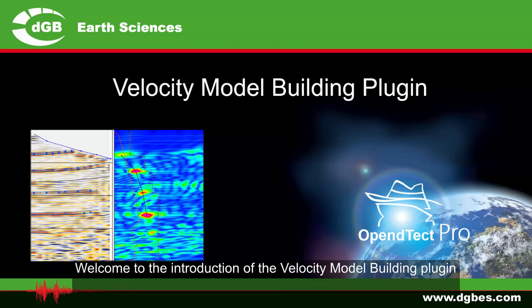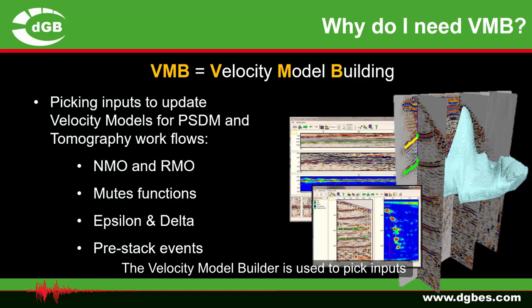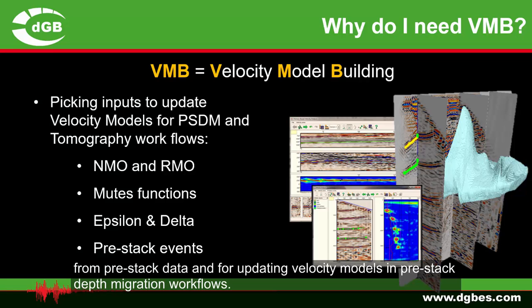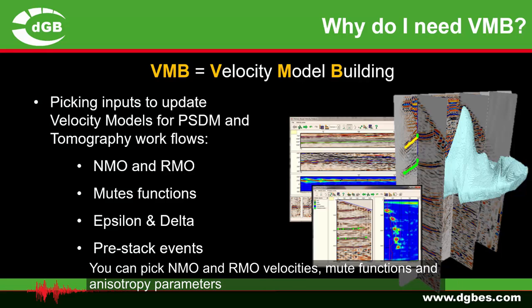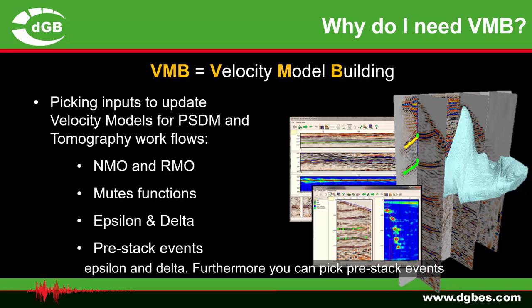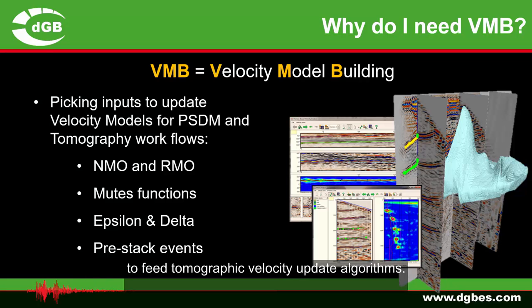Welcome to the introduction of the Velocity Model Building plugin. The Velocity Model Builder is used to pick inputs from pre-stack data and for updating velocity models in pre-stack depth migration workflows. You can pick NMO and RMO velocities, mute functions, and anisotropy parameters epsilon and delta. Furthermore, you can pick pre-stack events to feed tomographic velocity update algorithms.